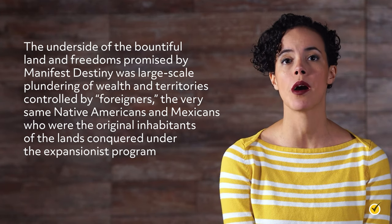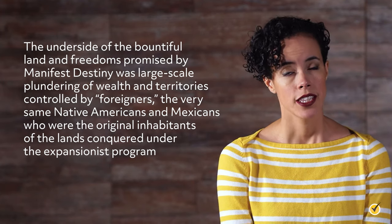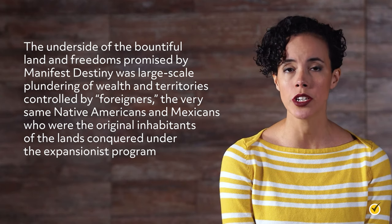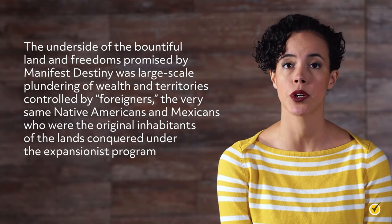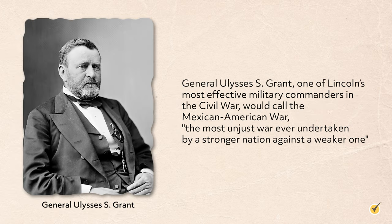The underside of Manifest Destiny was large-scale plundering of wealth and territories controlled by foreigners — the very same Native Americans and Mexicans who were the original inhabitants of the lands conquered under the expansionist program. Harsh critics were on the scene from the outset, among them a young politician named Abraham Lincoln, then an Illinois congressman. After hostilities in the Mexican-American War began in 1846, Lincoln emphatically pointed out that President Polk had unnecessarily and unconstitutionally commenced a war with Mexico. Later, General Ulysses S. Grant would call the Mexican-American War 'the most unjust war ever undertaken by a stronger nation against a weaker one.'